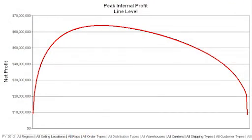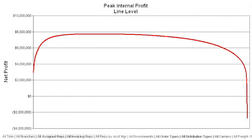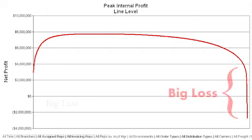Every company has a whale curve, and the only real difference between companies is whether the tail end of the whale ends above or below the zero line — meaning whether they make or lose money. The super-performing companies have almost no money-losing sales on the right-hand side and keep almost all of the money that they make on their most profitable sales.